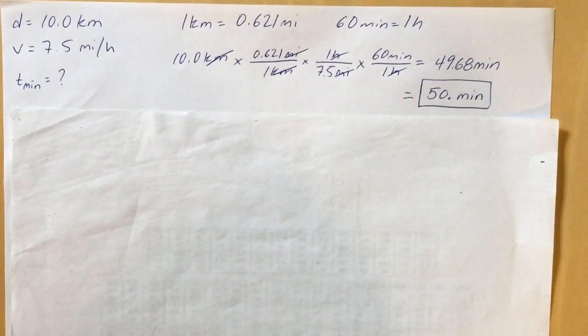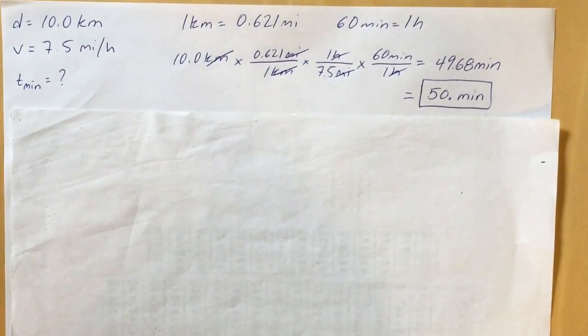Okay so let's check this one out. The givens are there on the left, the top left. The distance is 10.0 kilometers. The velocity that she's running is 7.5 miles per hour and we're looking for that time in minutes.